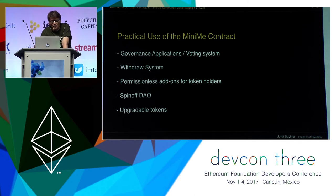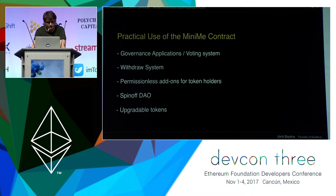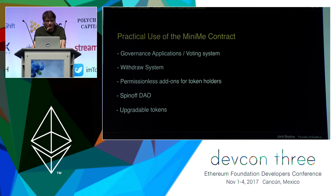The same way you create a voting token, you can also create many functionalities like a discount token or reputation token. A discount token would work this way: the discount token may be used to buy another token at a given discount, and it will be redeemed when the new tokens are purchased and the discount is applied. Another usage is to create a token for a spin-off DAO. The MiniMe token also makes your project future-proof, making it easy to upgrade to a new version of the contract. And probably the most incredible facet of this token is that anyone can create a clone token in a permissionless way, so that anyone can add value to the community.